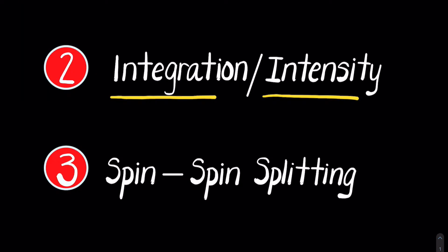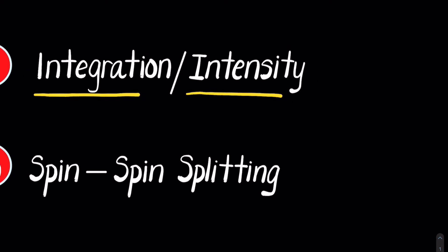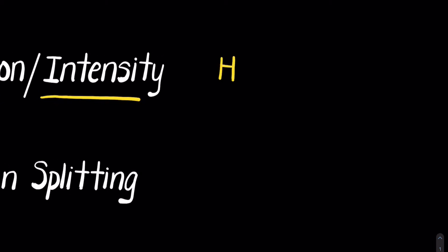The second thing you want to keep in mind when looking at any NMR spectrum is the integration and intensity — they pretty much mean the same thing, that's why I put the slash. In H1 NMR spectra, the area under each absorption peak can be electronically integrated to determine the relative number of hydrogens responsible for each peak.